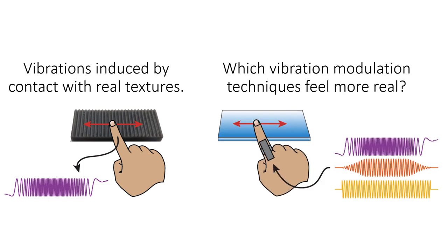Using a custom fibro-tactile wearable ring, this paper explores several alternative ways to modulate vibrations as a function of finger speed, as well as effects on perceived realism under different textural length scales and contact conditions.